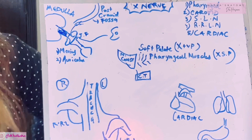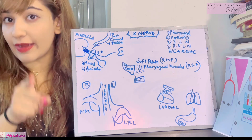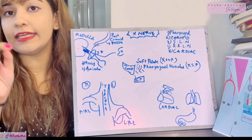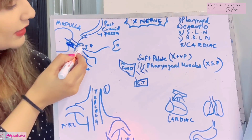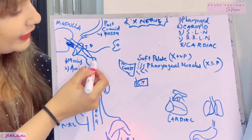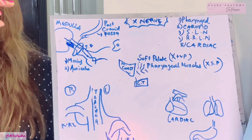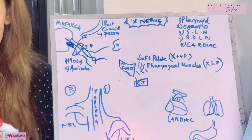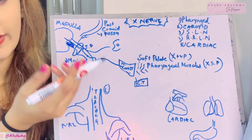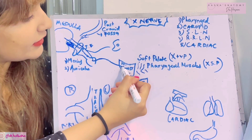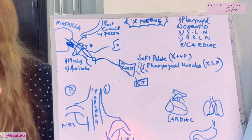An important point about the inferior ganglion: the vagus nerve is joined by fibers of the cranial root of the 11th nerve. These cranial root fibers enter the inferior ganglion. The first branch from the inferior ganglion is the pharyngeal branch, which carries fibers from the 11th nerve. The pharyngeal branch goes to the middle constrictor of the pharynx, where it forms the pharyngeal plexus of nerves.